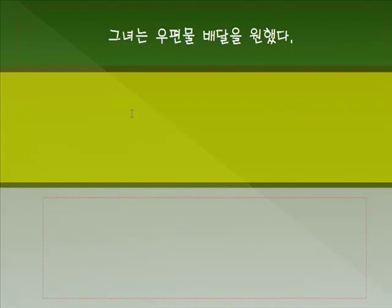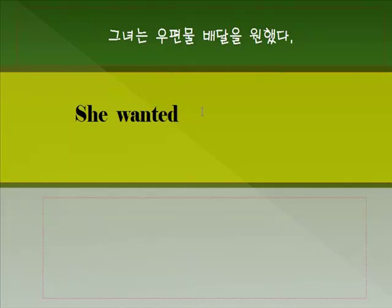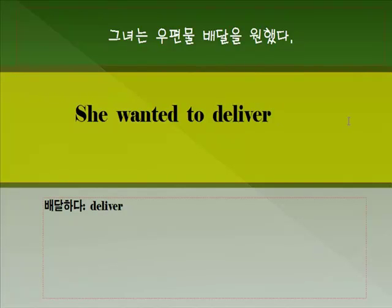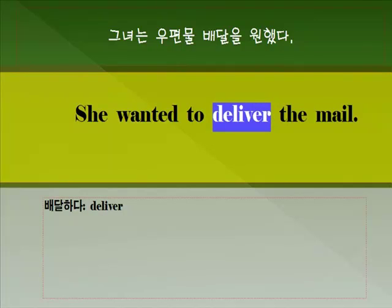두 번째 문장을 함께 보겠습니다. 그녀는 우편물 배달을 원했다. 'She wanted' — 뭐가 잘못됐죠? 문장의 처음은 대문자로 써줘야 됩니다. '뭐뭐 하는 것을 원했다'는 'want + to + 동사원형'을 씁니다. 배달하다는 'deliver'라는 단어를 씁니다. 우편물은 'mail'이면 됩니다. 완성된 문장: 'She wanted to deliver the mail.'